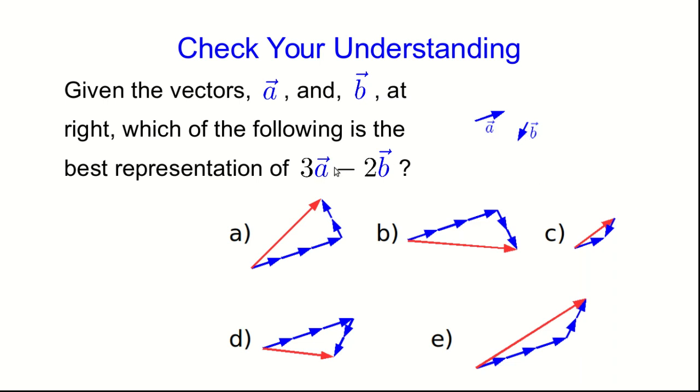Well note what we want to do because we're subtracting a multiple of b from some multiple of a is draw negative b. That will be useful. And whatever drawing is correct here must have negative b in it somewhere.